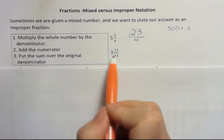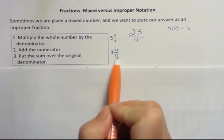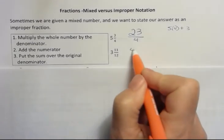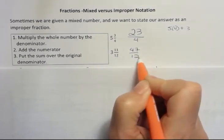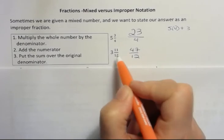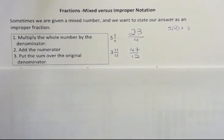The next one, 3 times 12 is 36 plus 11 is 47, all over the original denominator, which is 12. It's okay if you want to use a calculator to do 3 times 12 plus 11, that'd be totally fine. But you should know the process even without a calculator.